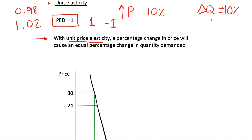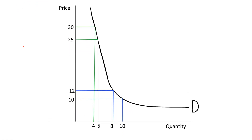Increasing price by 10% will decrease our quantity demanded by 10% — that seems somewhat reasonable. What we can now do, as we did with the elastic and inelastic price elasticities, is see what this looks like on a diagram. With unit price elasticity I'll do something slightly different: we're going to have our price elasticity equal to 1 at every point of this demand curve. This is what we call a constant price elasticity demand curve. This is different from the elastic and inelastic diagrams because those demand curves were not actually constant elasticity.